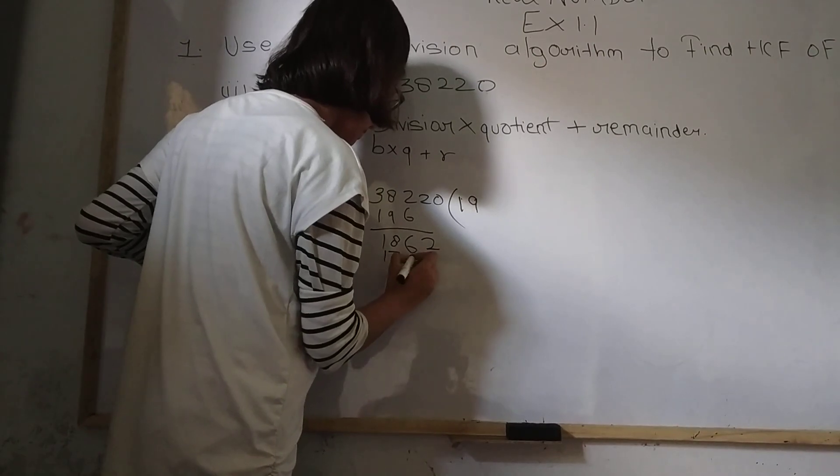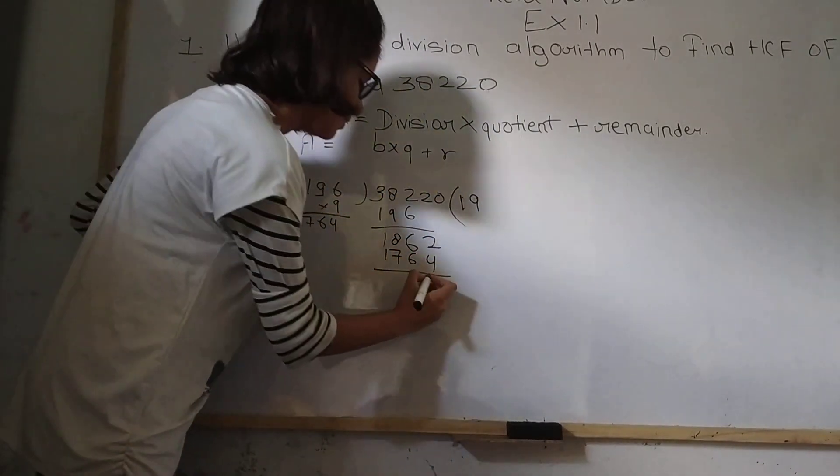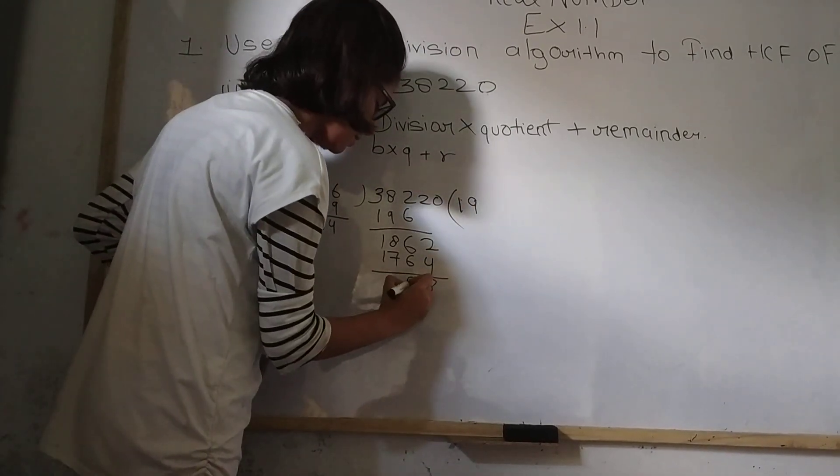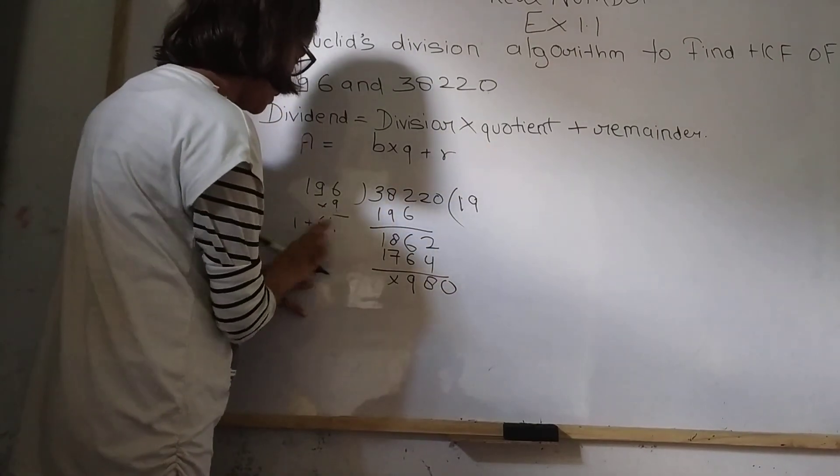So here it will come 17, 64. So 12 minus 4, 8. Here 5, 5 minus 6, 9 and here nothing, 0. Let me erase it.